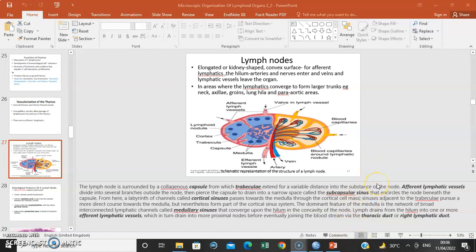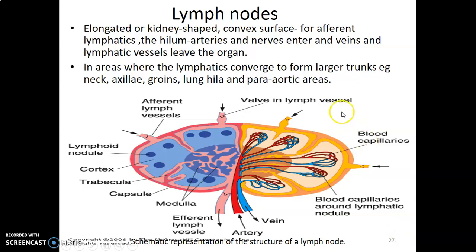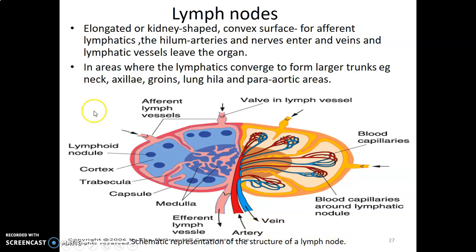This is the last series on the microscopic organization of lymphoid organs, continuing from lymph nodes. Lymph nodes are usually elongated and kidney-shaped, with a convex surface where afferent vessels bring lymph in, and a hilum where efferent lymphatics exit. These lymphatics converge to form larger trunks in areas such as the neck, axilla, and groin, where axillary and inguinal lymph nodes are found.